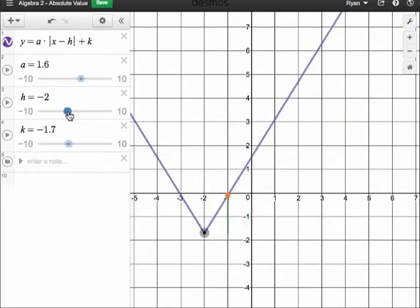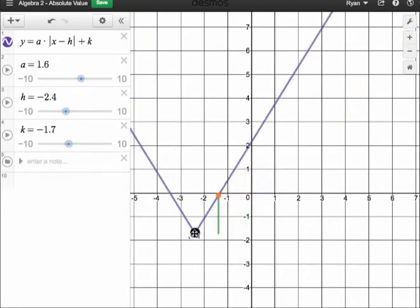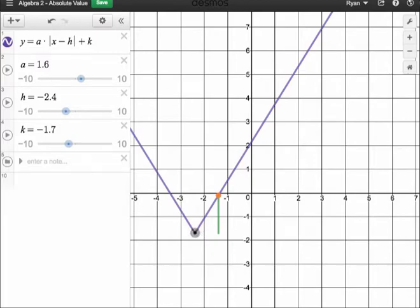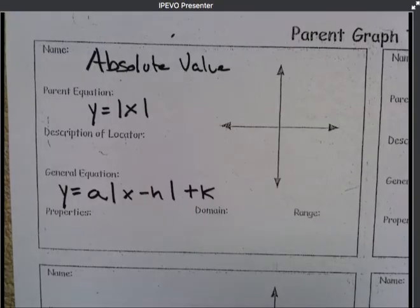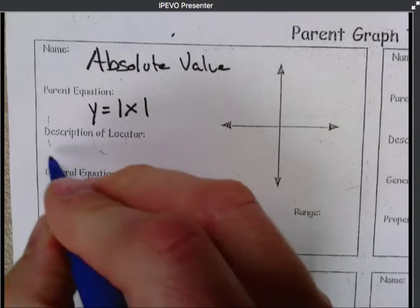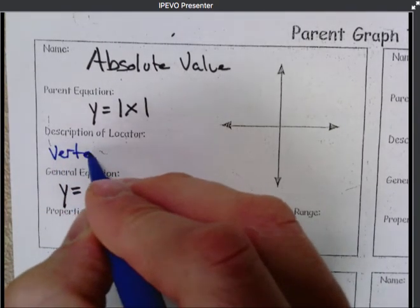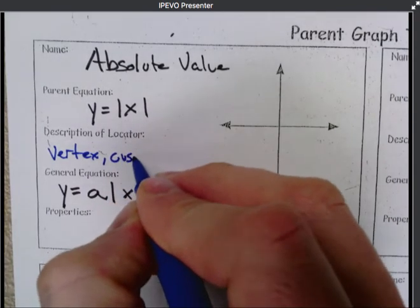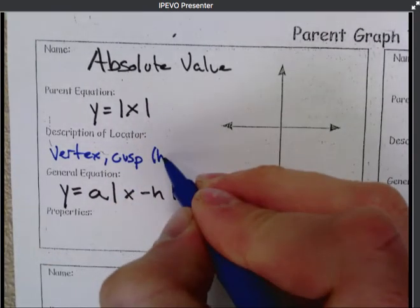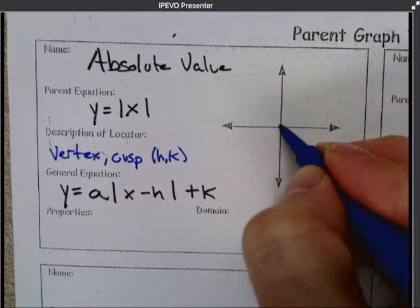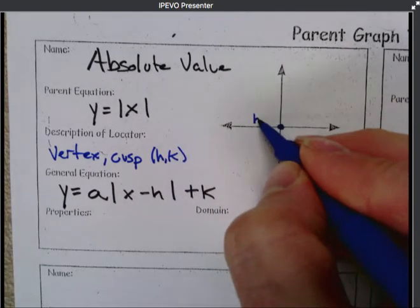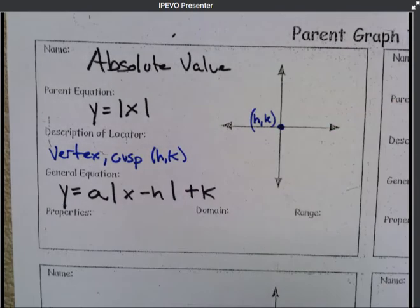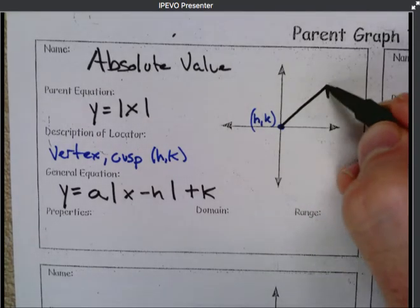So that stretch factor is always from starting at your vertex. So let's put that into our notes. The description of the locator is called the vertex. And the other technical word for it is called the cusp, C-U-S-P. And that's going to be at h, k. So we'll draw our parent graph here. Here's going to be h, k. And it is going to be a v-shaped graph.